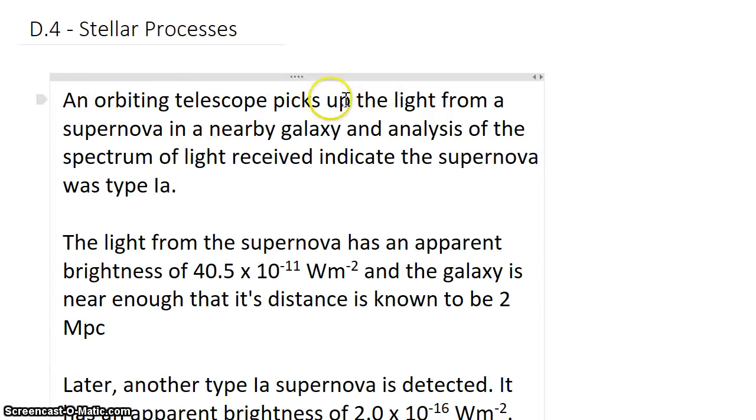We have an orbiting telescope, and it picks up the light from a supernova in a nearby galaxy. Analysis of the spectrum of light indicate that this supernova was a type 1a supernova.